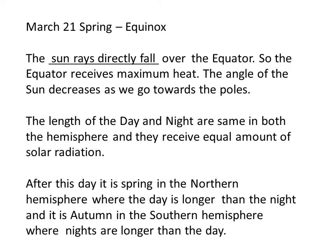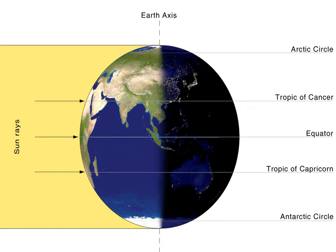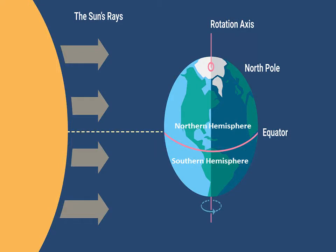For better clarity, look at this diagram. On 21st March, the spring equinox, the sun rays directly fall over the equator, so the equator receives maximum heat. The angle of the sun decreases as we go towards the poles. But after 21st March, slowly days in the northern hemisphere will become longer than nights. That means slowly summer season will start.